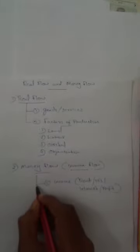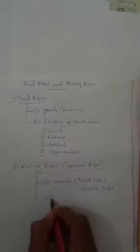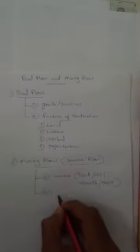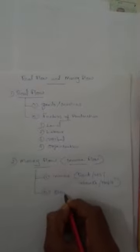These factor incomes go to the factors of production: land will get rent, labor will get wages or salaries, capital will get interest, and organization will get profit. The second component of money flow is expenditure. So money flow has two components: income side and expenditure side.